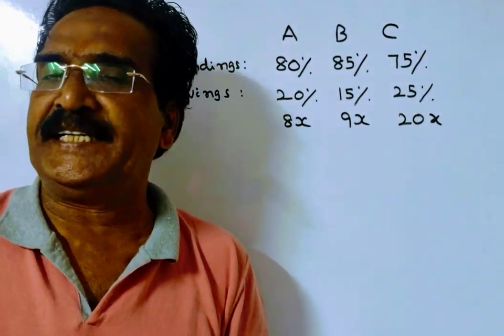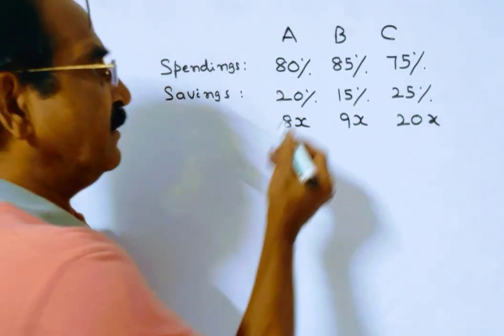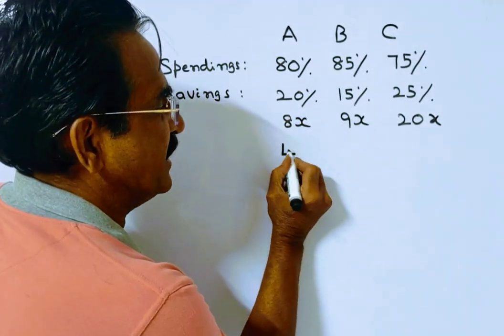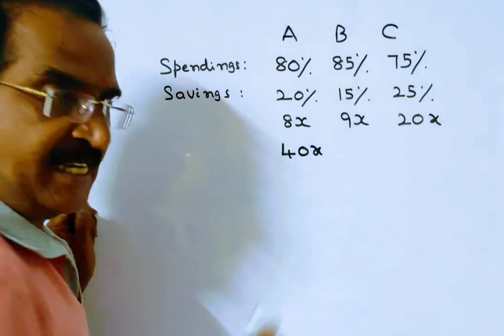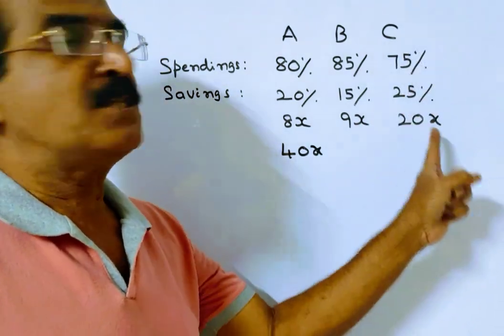So 20% is equal to 8x, means 100% equals 100 by 20 times 8, which is 40x. This is A's income. Friends, coming to C's income.